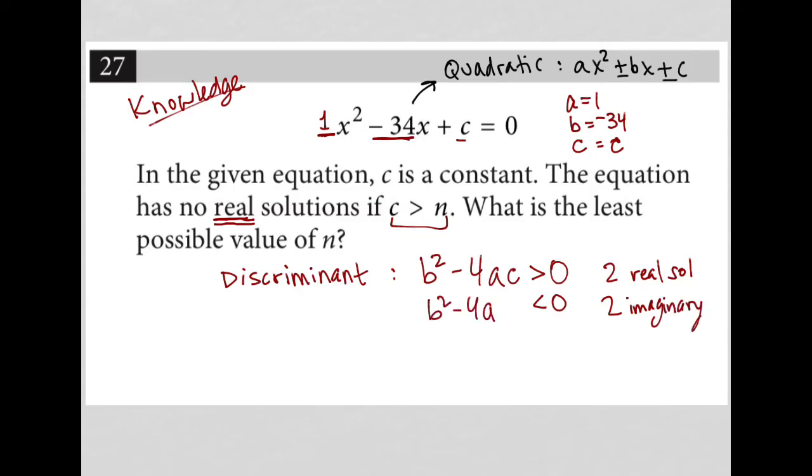And this is where we want to be. We want to be in the b² - 4ac is less than 0 because that allows us, if we have two imaginary solutions, that means we have no real solutions. So I'm just going to use this formula with what I have. I know what a is, I know what b is, I know what c is, and I'm going to plug that in and see how do I make this work.